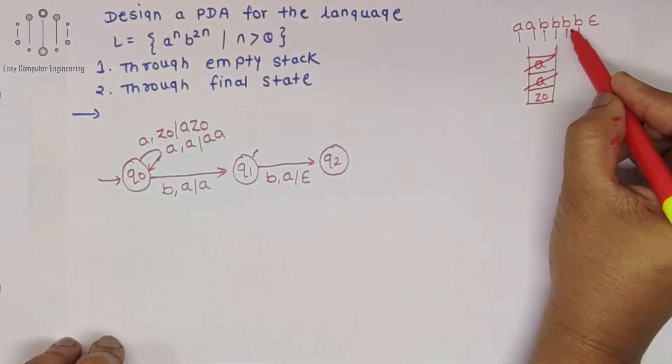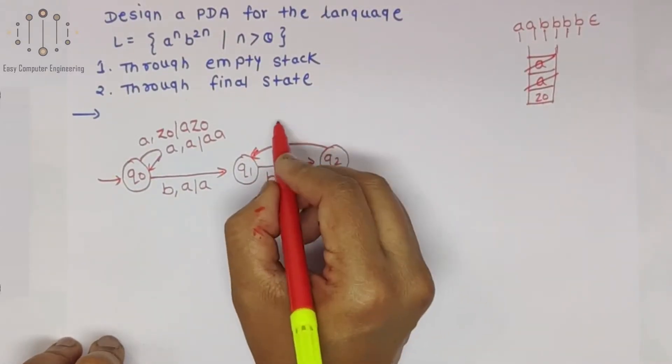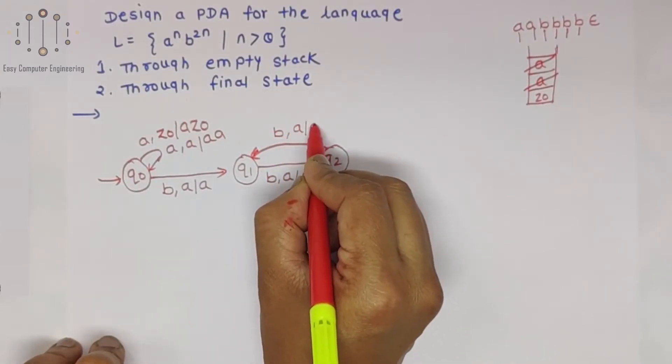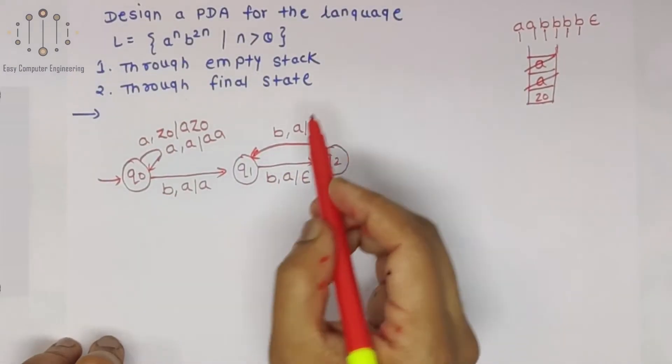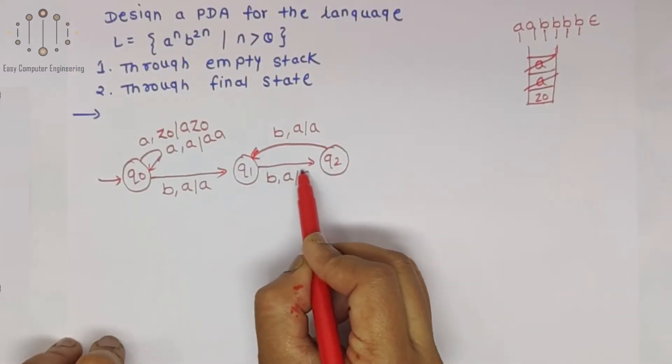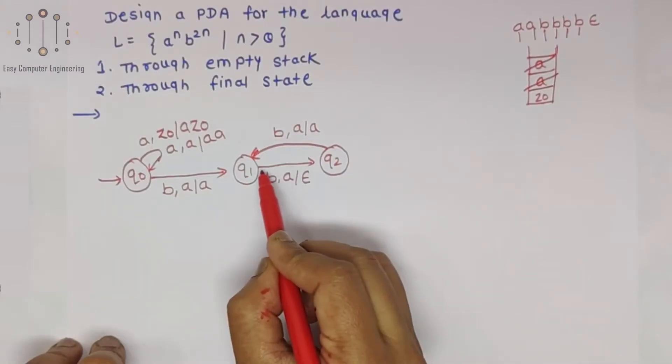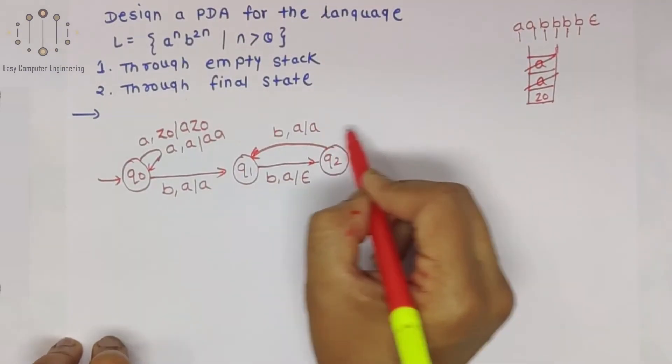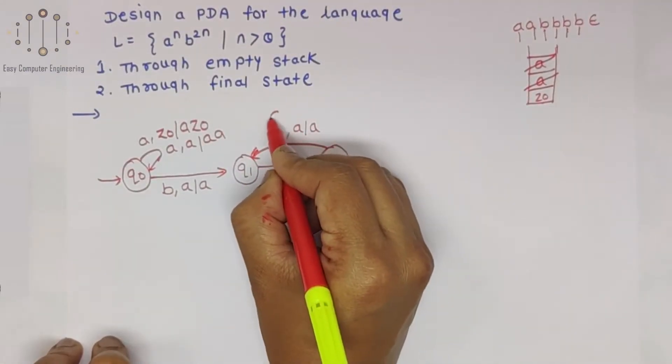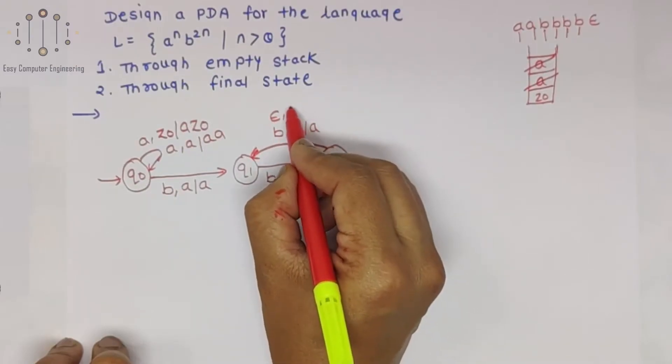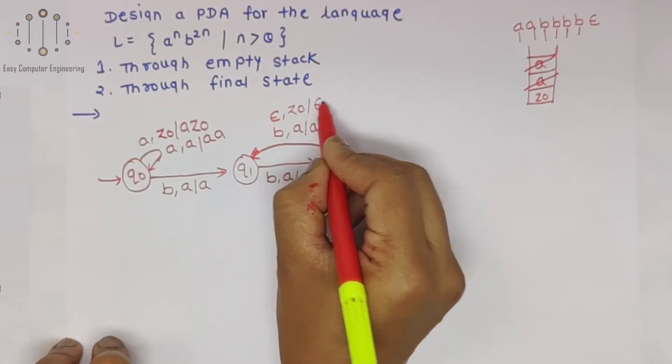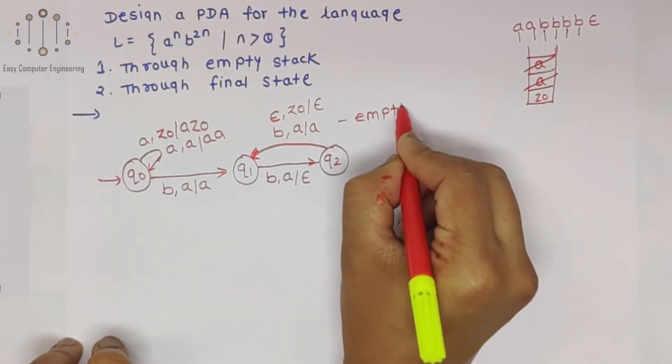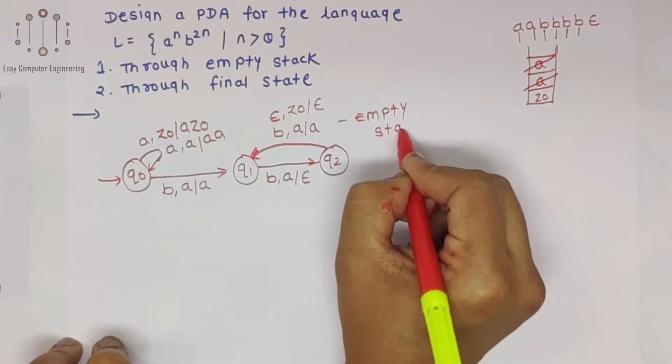Now for next B, just read that B and keep A as it is, don't pop it. But for second B we will pop the A. Later on there is epsilon. For epsilon we can show: in stack there is Z0, pop it. This is the case of empty stack condition.